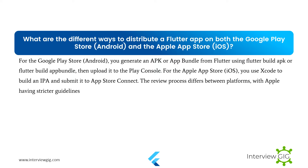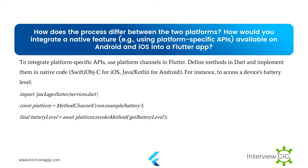What are the different ways to distribute a Flutter app on both the Google Play Store (Android) and the Apple App Store (iOS)? For the Google Play Store, you generate an APK or app bundle from Flutter using 'flutter build apk' or 'flutter build appbundle', then upload it to the Play Console. For the Apple App Store, you use Xcode to build an IPA and submit it to App Store Connect. The review process differs between platforms, with Apple having stricter guidelines.